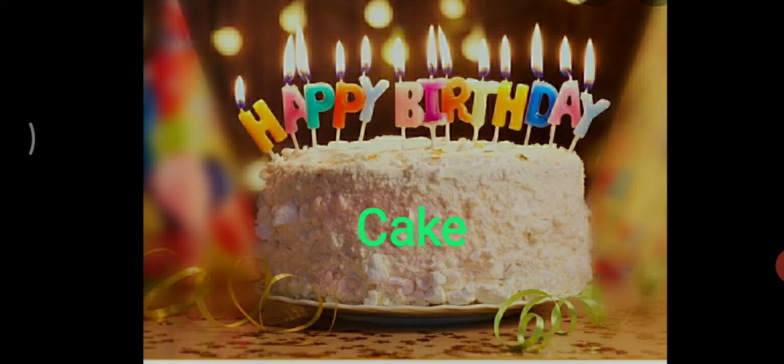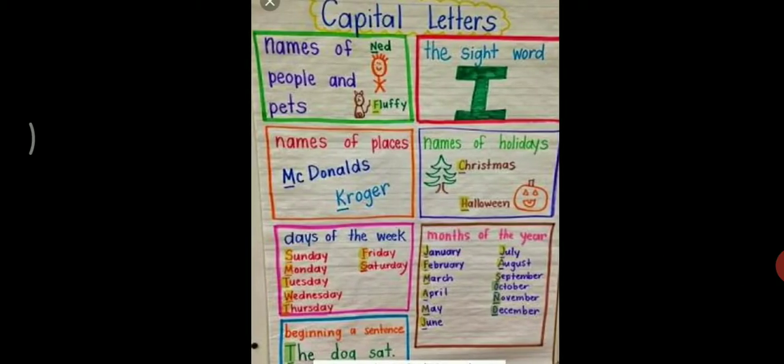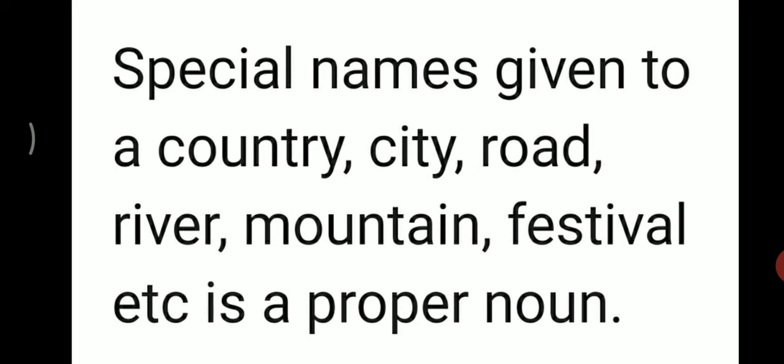Special names given to people, places, pets, days, months, organizations, etc. are proper nouns. For example, John the clown entertains people in circus. In this sentence, we are talking about John the clown — John is the special name for the clown. I live in Mumbai. Mumbai is a special name for the city. His dog's name is Pluto. Pluto is the special name for the dog. All proper nouns begin with capital letters.